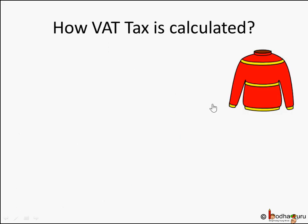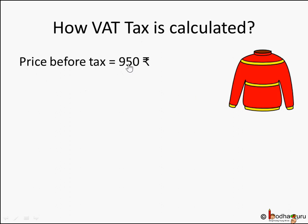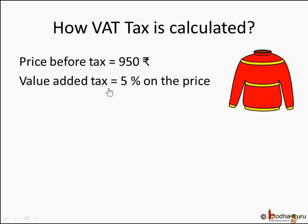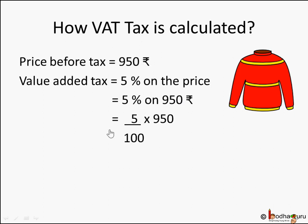Now let's try to find out how this tax is calculated. Let's take the example of value added tax or sales tax. The price before tax that the shopkeeper calculated was 950 rupees. Let's say the value added tax or sales tax is 5% on this price — the price before tax. So we know from percentage how do we calculate this value: if the tax was 5%, and it's 5% on 950 rupees, it's nothing but 5 by 100 into 950. Because 5% really means you have to pay 5 rupees tax on every 100 rupees.